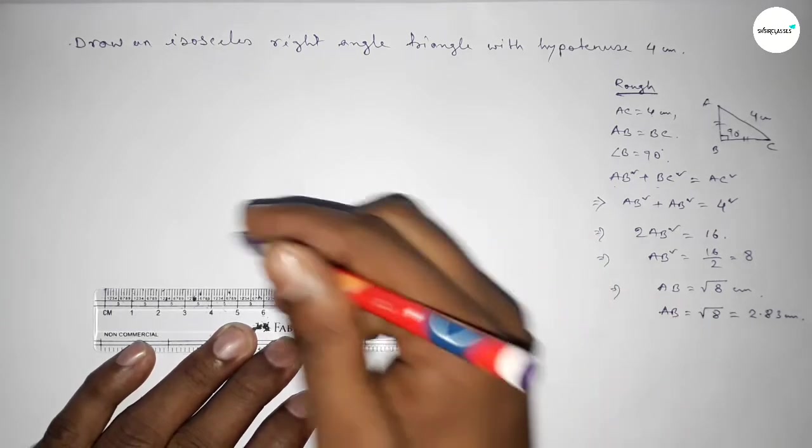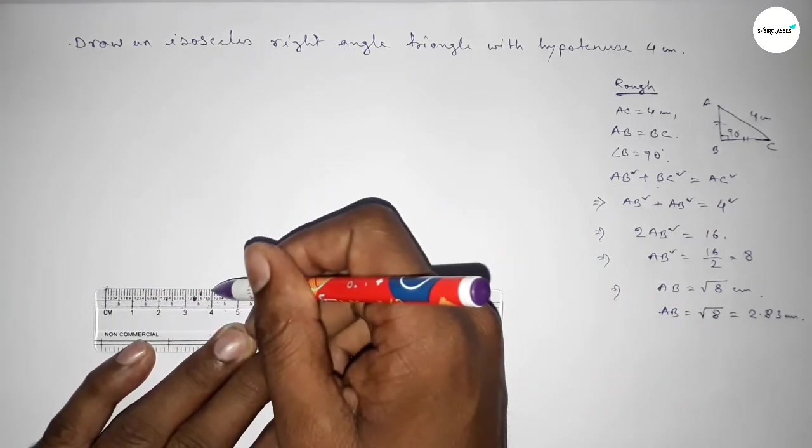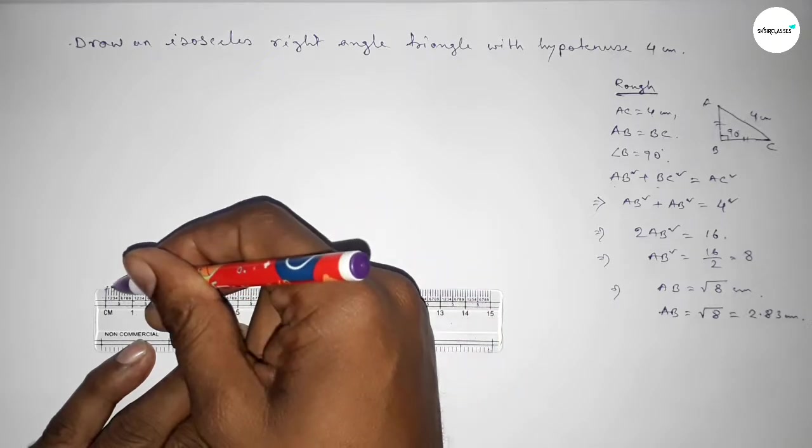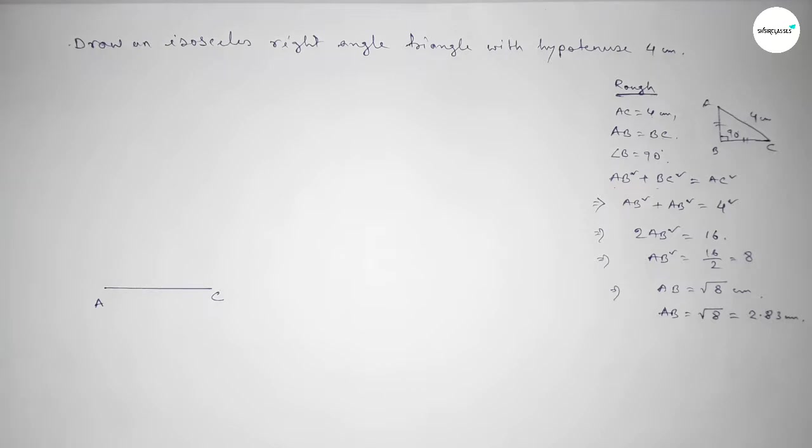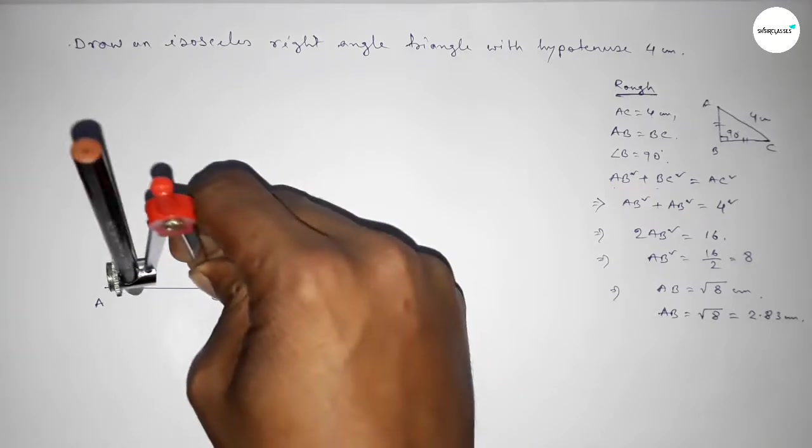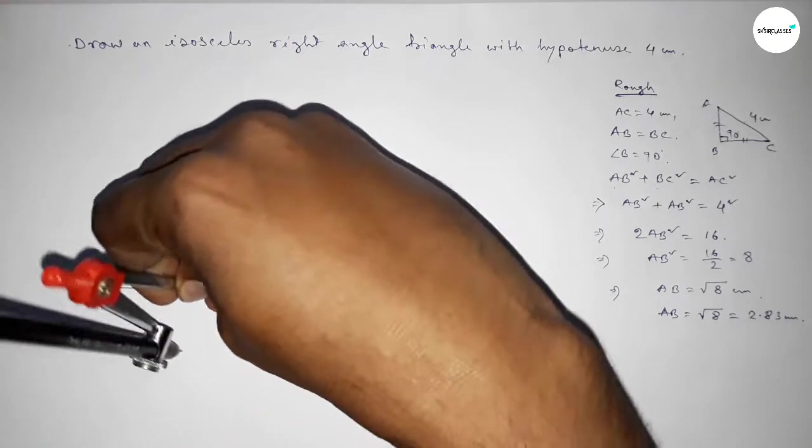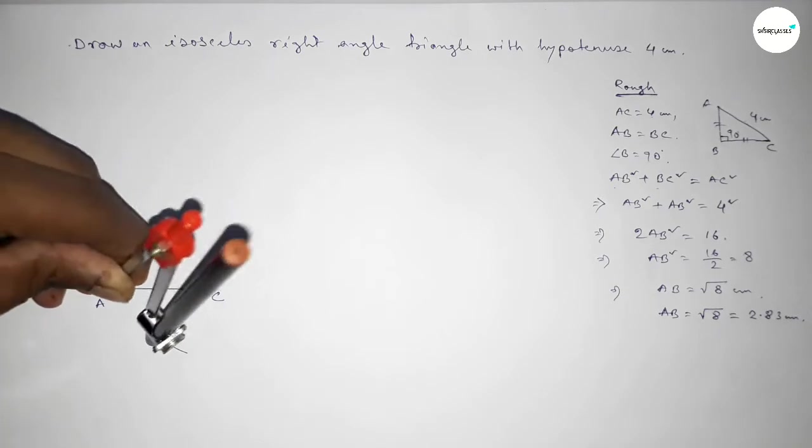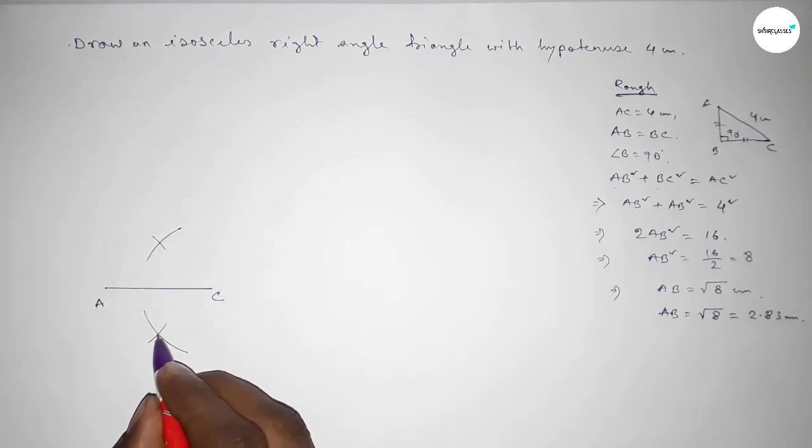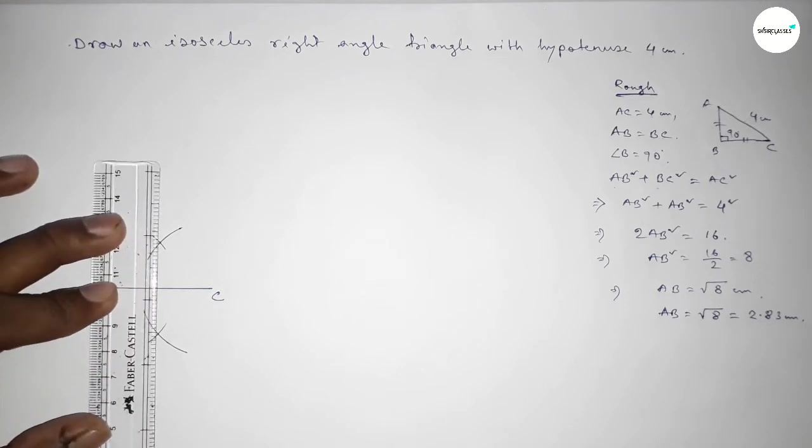First drawing here a line of length 4 centimeter. This is 4 centimeter, taking here A point and here C point. Now we have to bisect this line. Putting the compass here and taking greater than half of AC, drawing arc by this way with same length. Putting the compass here and cut here and cut here. Both curves intersect at two points. Now joining this bisector.